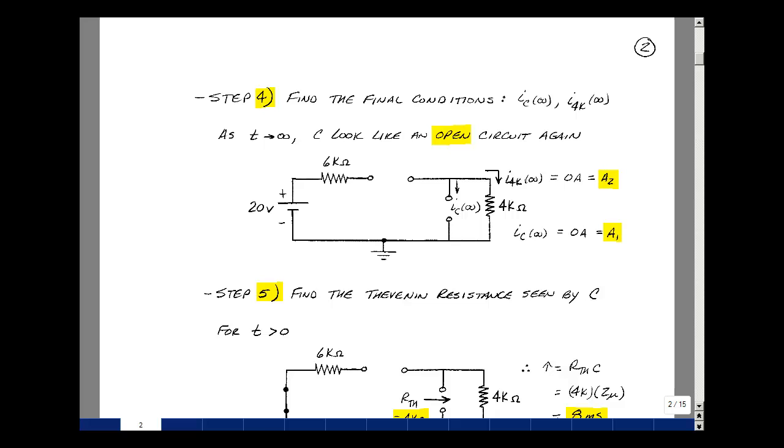Take a look at, as time approaches infinity, or really five time constants, the capacitor will again look like an open circuit. So what's the current flowing in this resistor? Well, there's an open here because of the switch, so there's no current coming in, therefore there's nothing here.